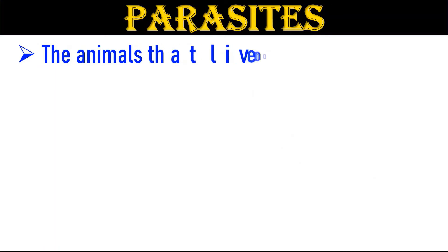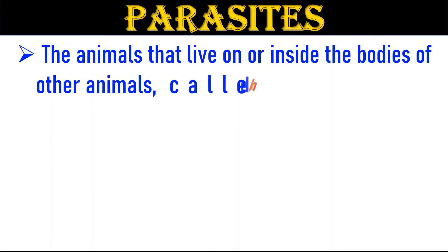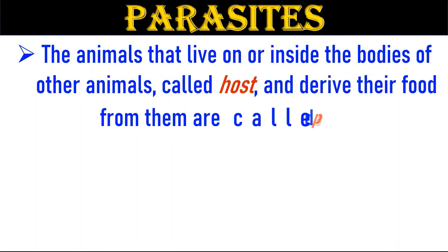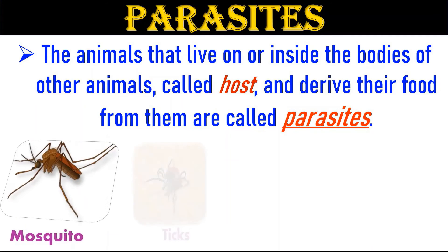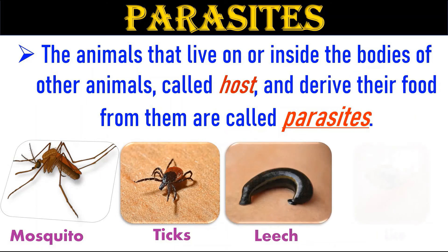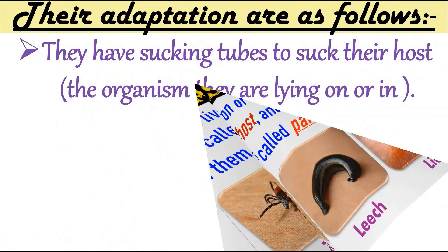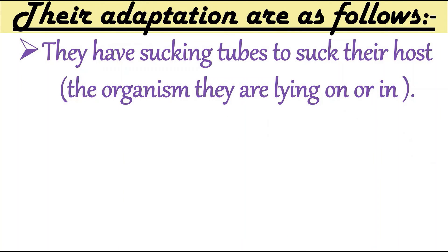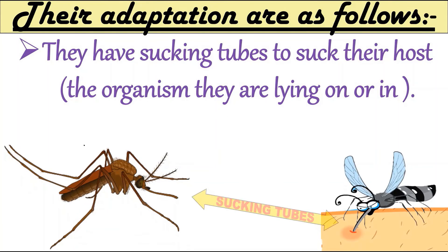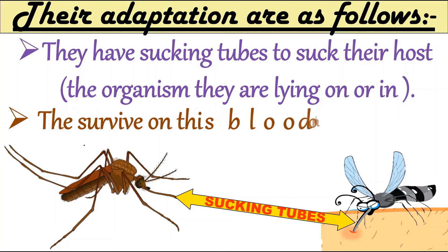Next is parasites. The animals that live on or inside the bodies of other animals, called hosts, and derive their food from them are called parasites. Mosquitoes, tick, leech and fleas are some examples of parasites. Their adaptations are as follows: they have sucking tubes to suck their host, and they survive on blood only.